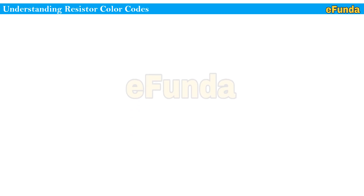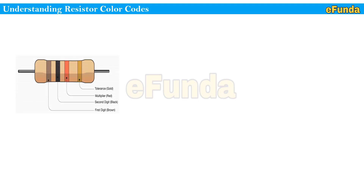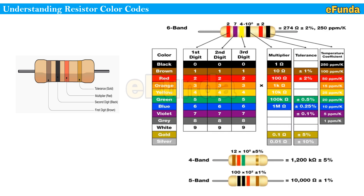We have come to our main topic: understanding resistor color code. One can refer to the first picture where the resistor band significance is shown: first digit is brown, second digit is black, third digit is the multiplier which is red, and the last band is the tolerance which is gold. One can also refer to the picture showing the 6-band resistor category: first digit, second digit, third digit, then the fourth digit is the multiplier, the fifth is the tolerance, and the sixth is the temperature coefficient.